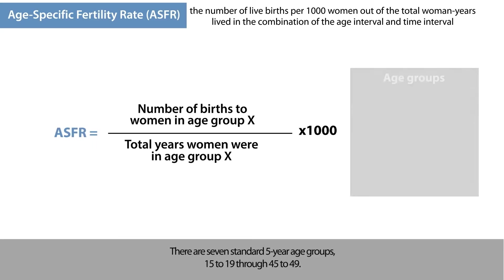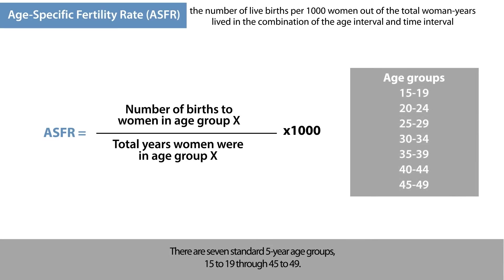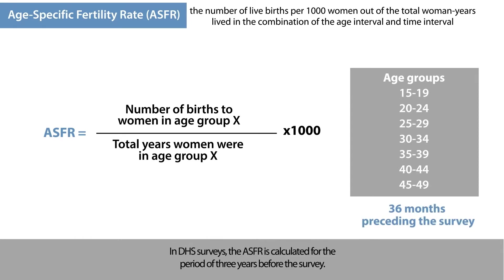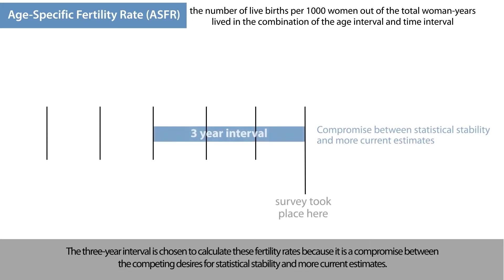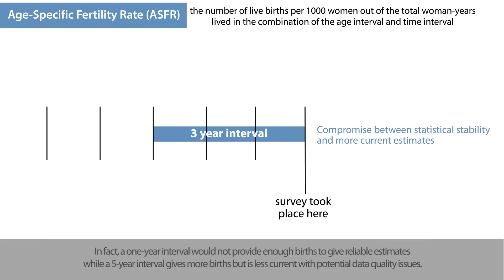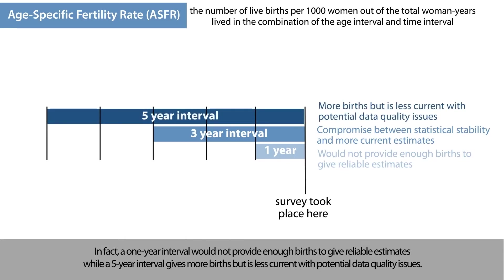There are seven standard five-year age groups, 15 to 19 through 45 to 49. In DHS surveys, the ASFR is calculated for the period of three years before the survey. Each woman's contributions to births and exposure in the three years, or 36 months, before the survey are assigned to the numerators and denominators of the relevant ASFRs. The three-year interval is chosen because it is a compromise between statistical stability and more current estimates. A one-year interval would not provide enough births to give reliable estimates, while a five-year interval gives more births but is less current with potential data quality issues.